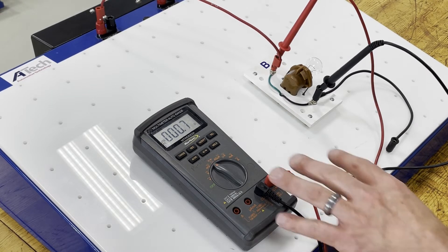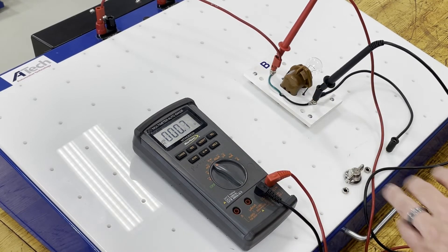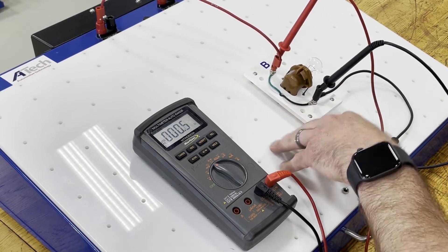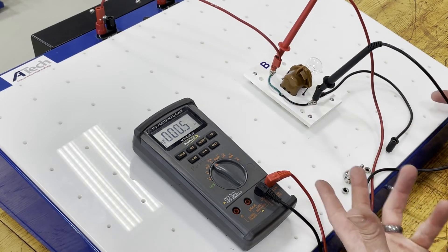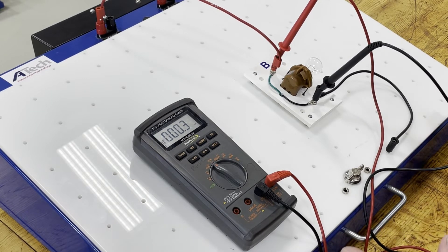The critical thing when I measure resistance is to know that I cannot have current active in the circuit so like in this case circuit has to be open or has to be turned off.